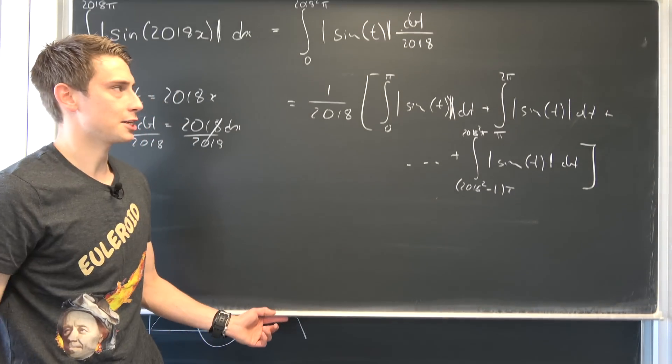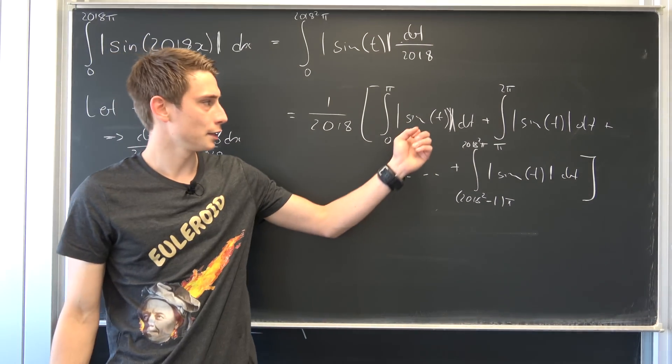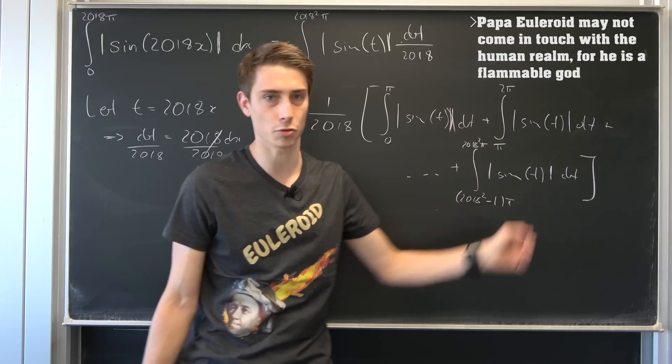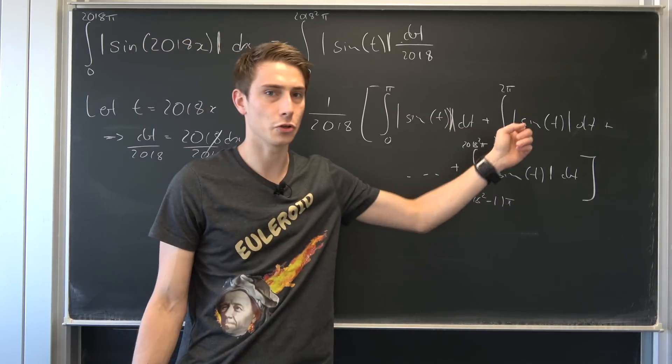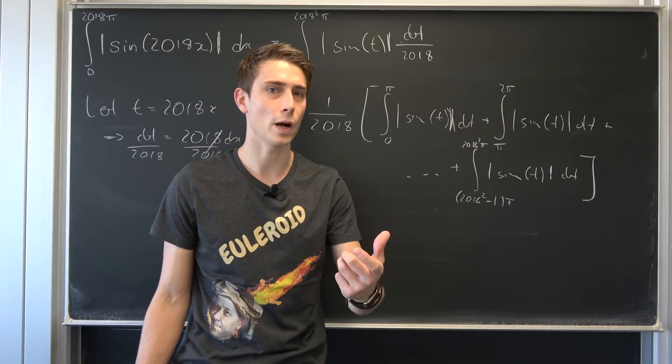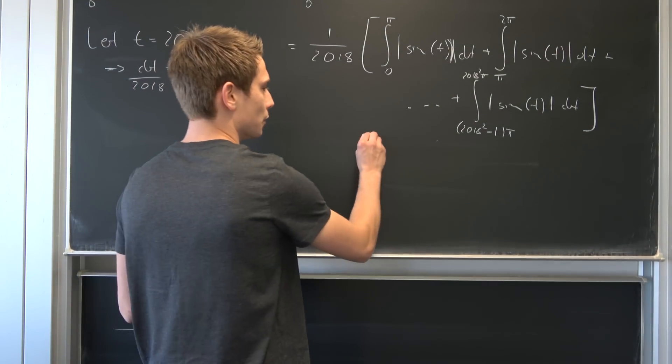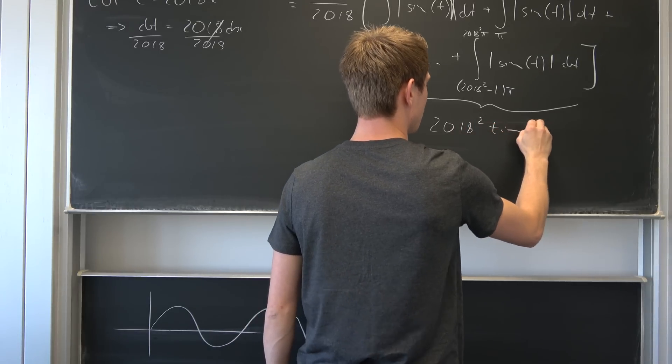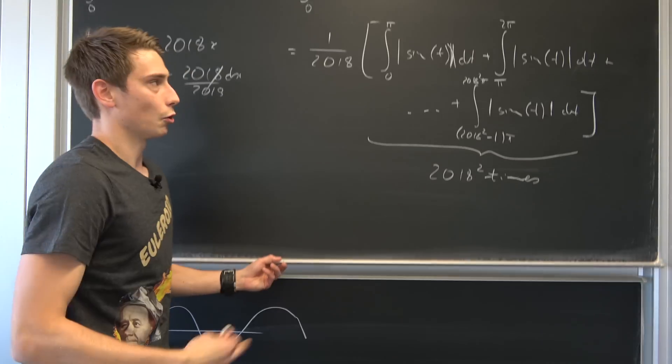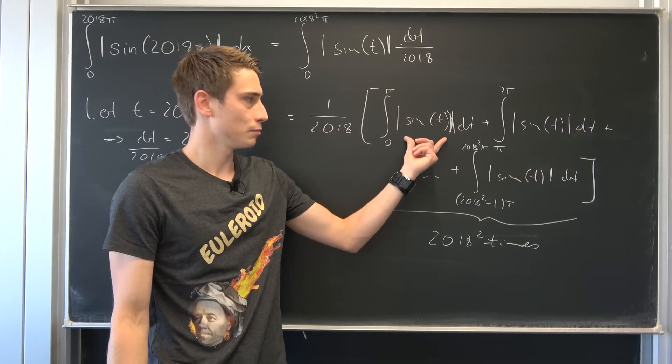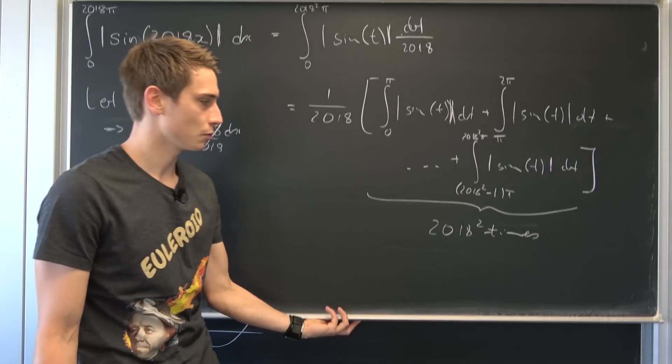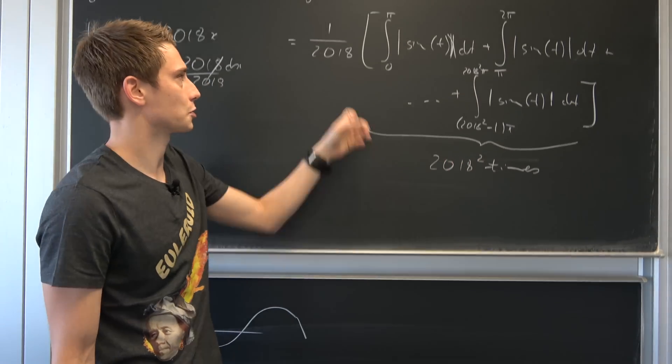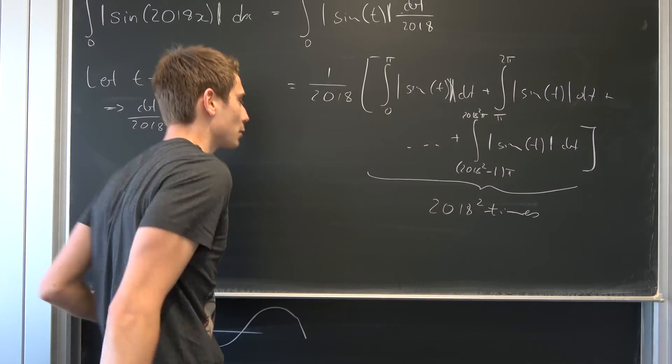And by our argumentation before, this right here has the same area as this one, as this one, this one, this one, blah blah blah, until this one. And we have those integrals right here 2018 squared times. So those right here exist 2018 squared times. So all that we're left to do is to calculate the area under the curve of that thing and well, just multiply it by 2018 squared and also by the reciprocal of this thing right here, and then we are basically done.